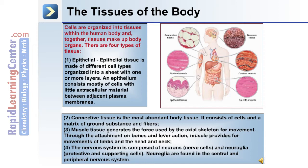Connective tissue is the most abundant tissue in the body, and it consists of cells and a matrix of ground substance and fibers. Muscle tissue generates a force used by the axial skeleton for movement, and cardiac muscle generates blood pressure and the force to move blood through the vascular system.